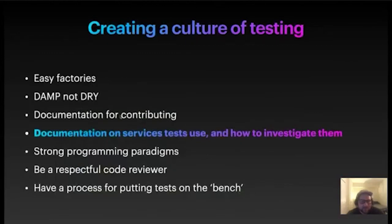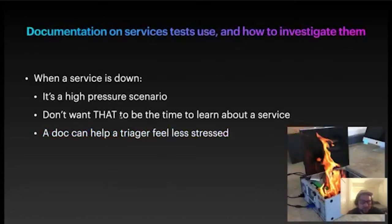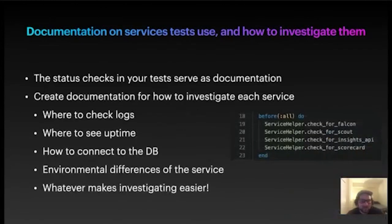In addition to how to contribute, it's also good to have documents on the services the tests use and how to investigate their outages. Why should we have that kind of documentation? When a service is down, it's high pressure — we don't want that to be the time to learn about a service. A doc can really help a triager feel less stressed when they're investigating things. The status checks in your tests and service documentation for what services those tests use — if you then have documentation for how to investigate each of those services, that's really great.